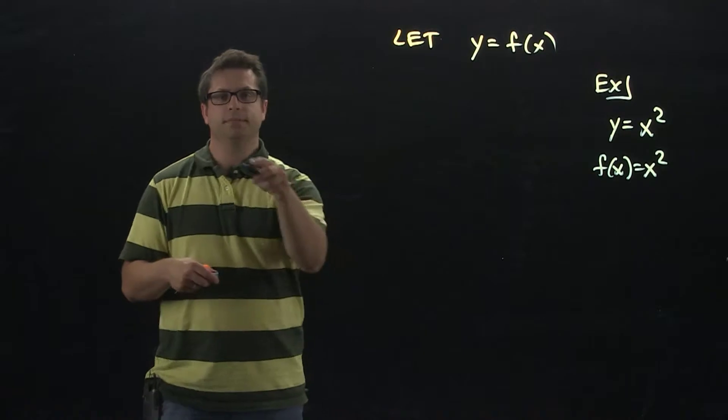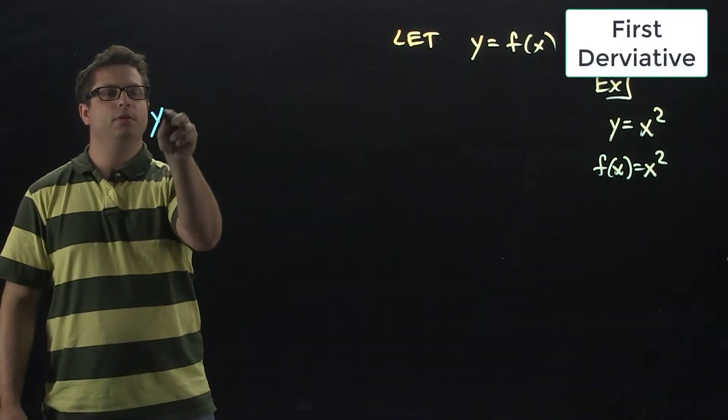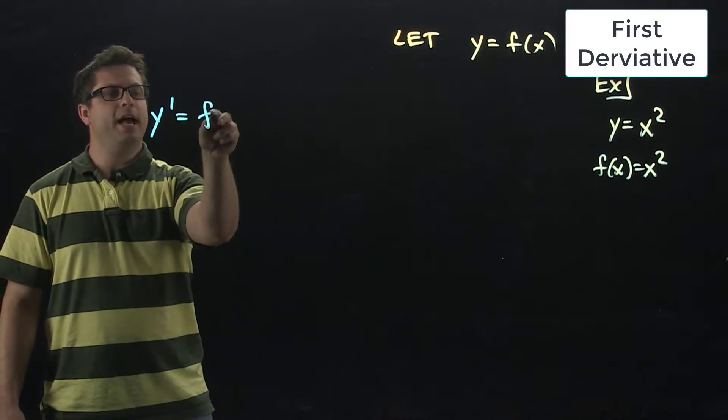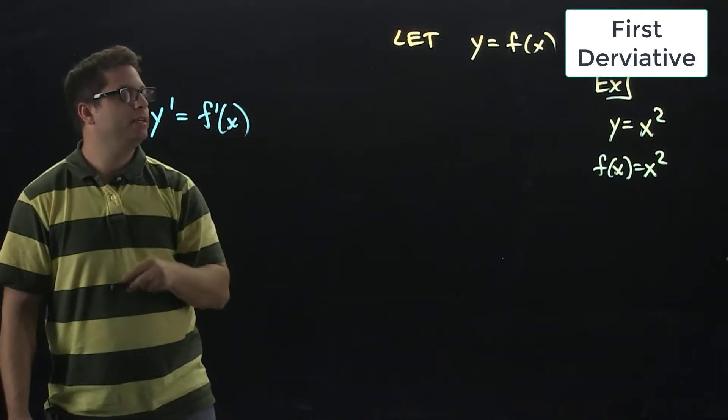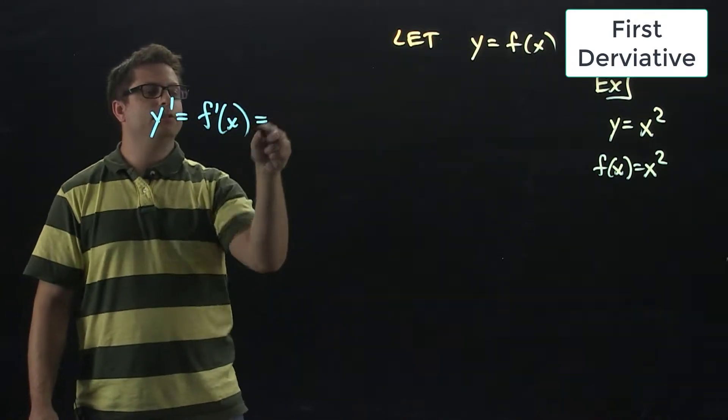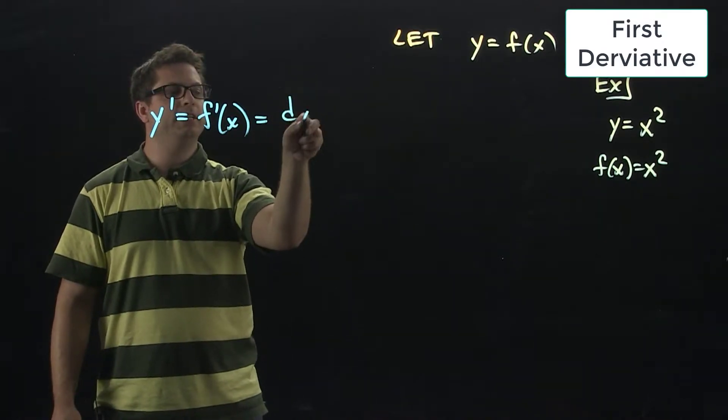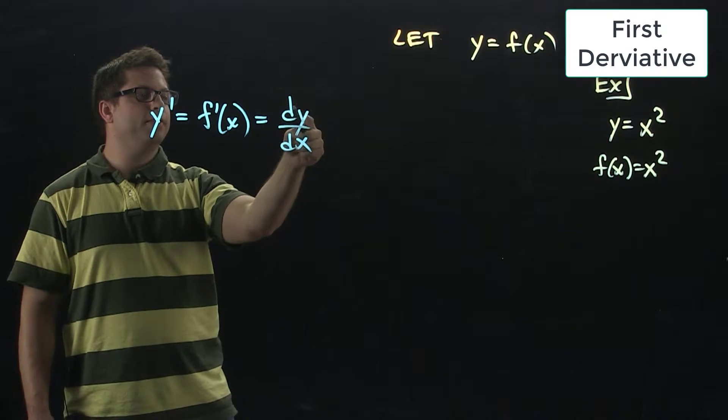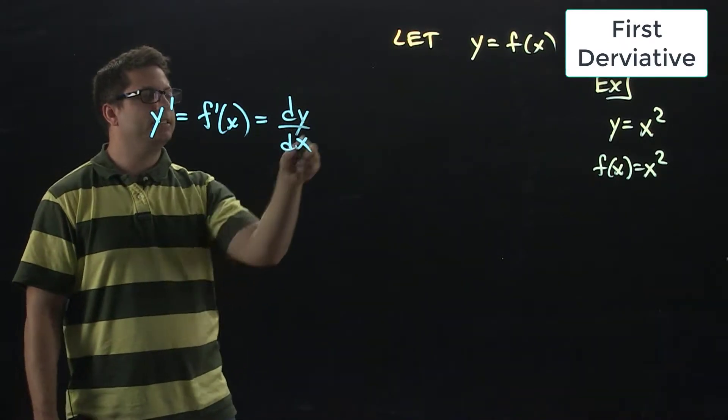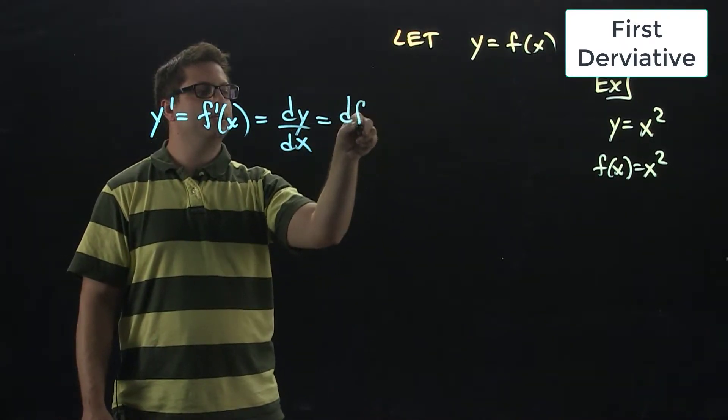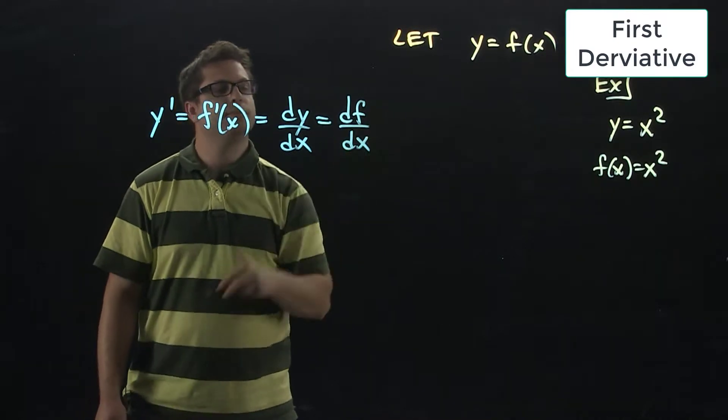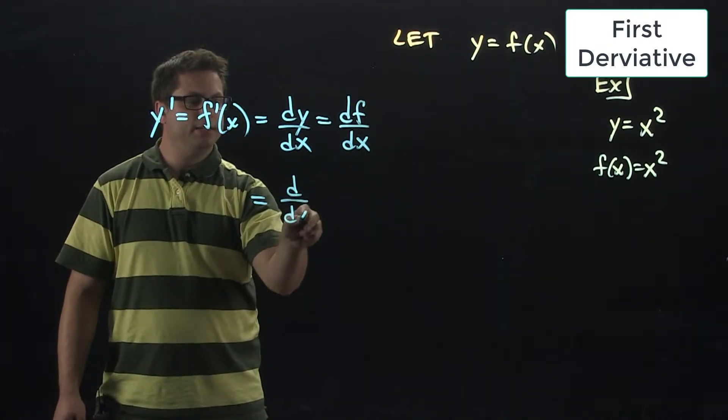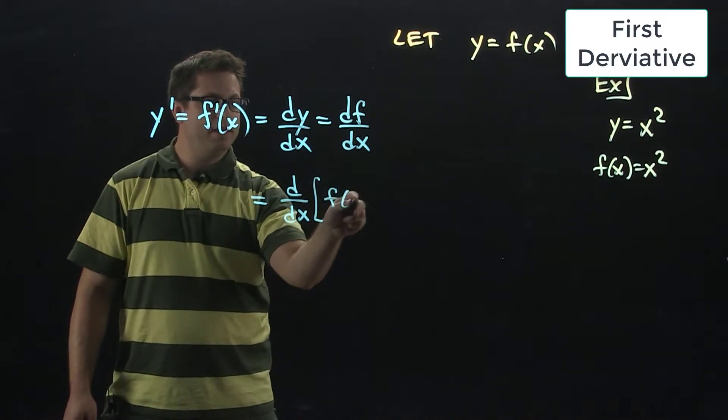Here are the different notations. I can use y prime, stand for the derivative. I could use f prime of x. I can use dy dx. This says take the derivative of the function y with respect to x. Also means that I can use df dx. I can also do d dx of f of x.